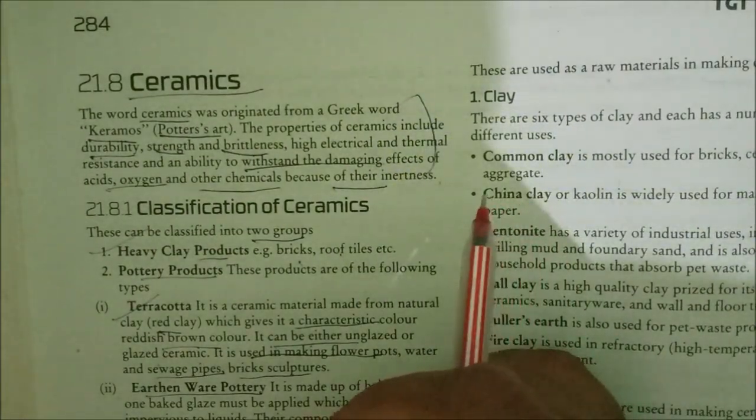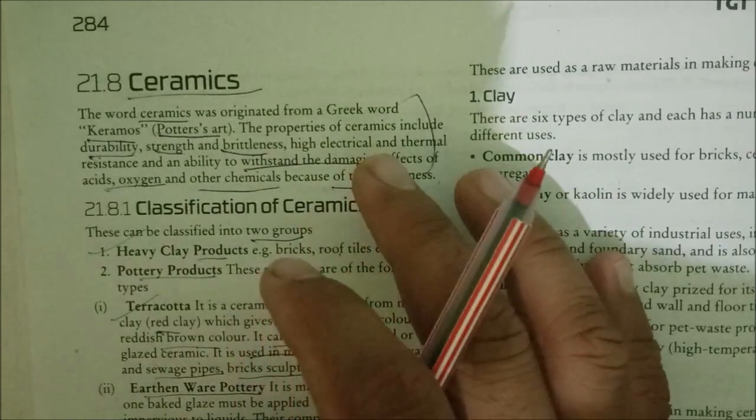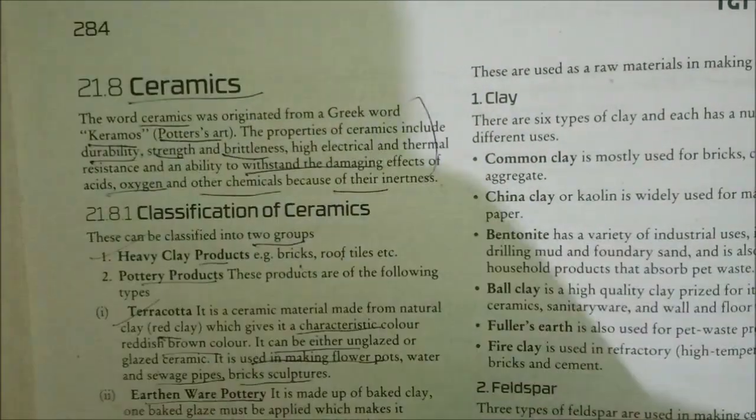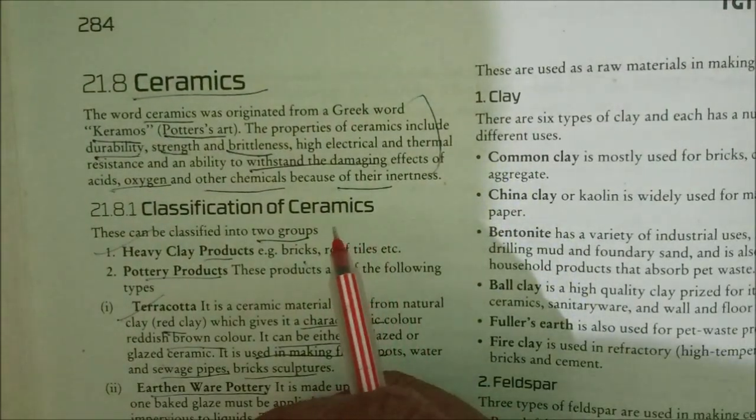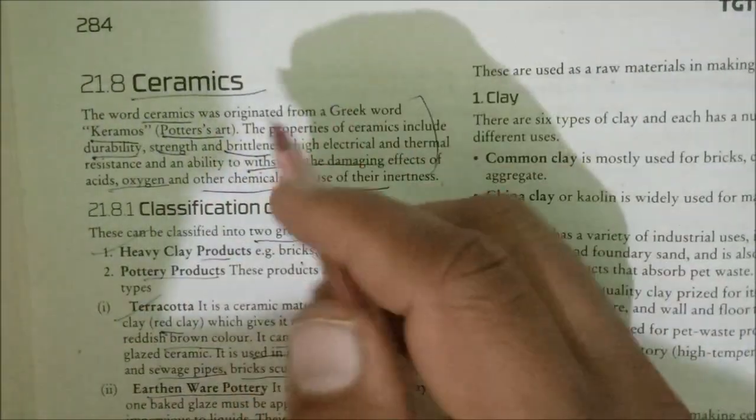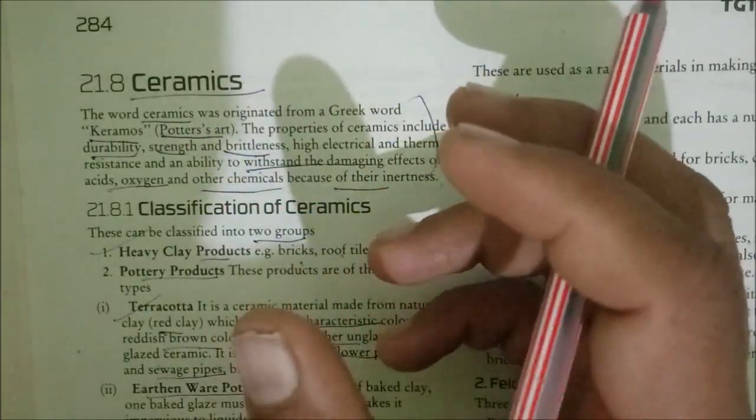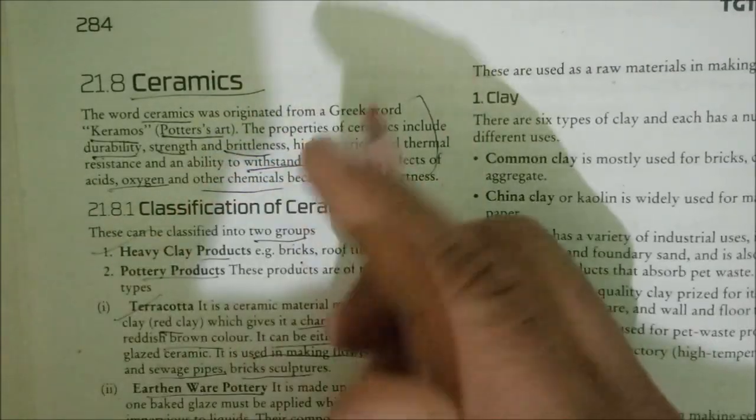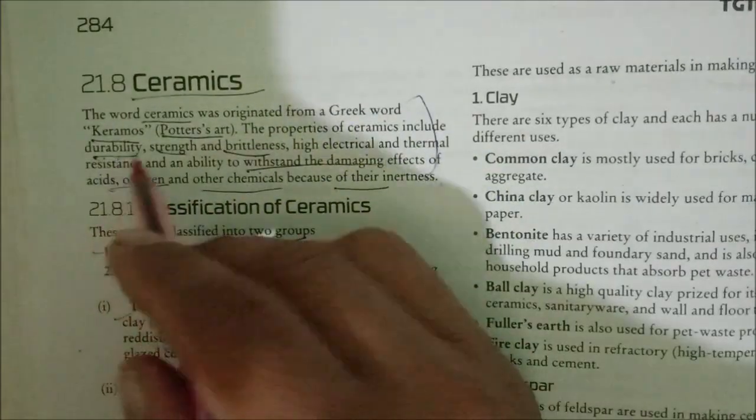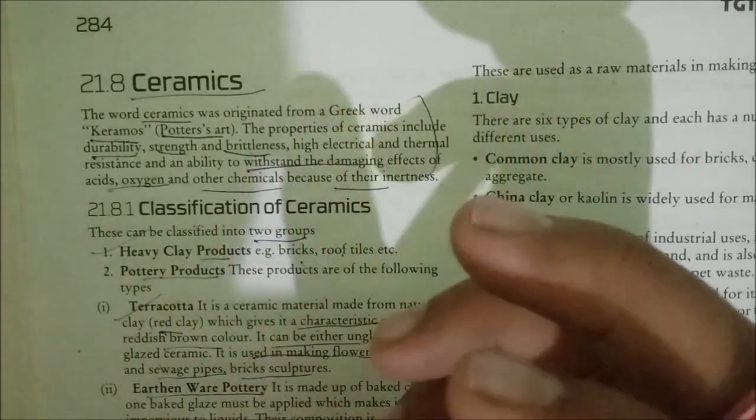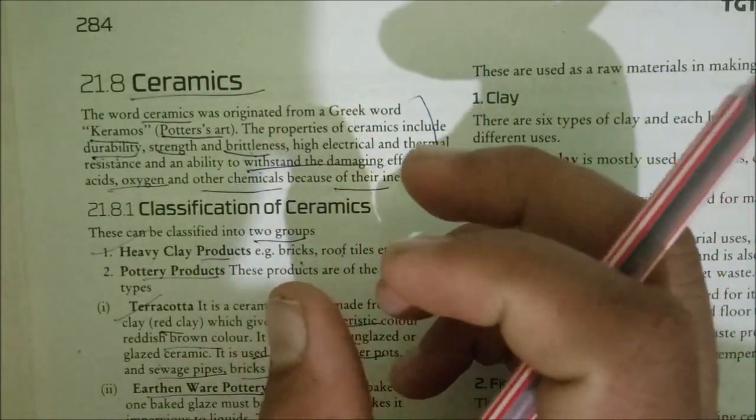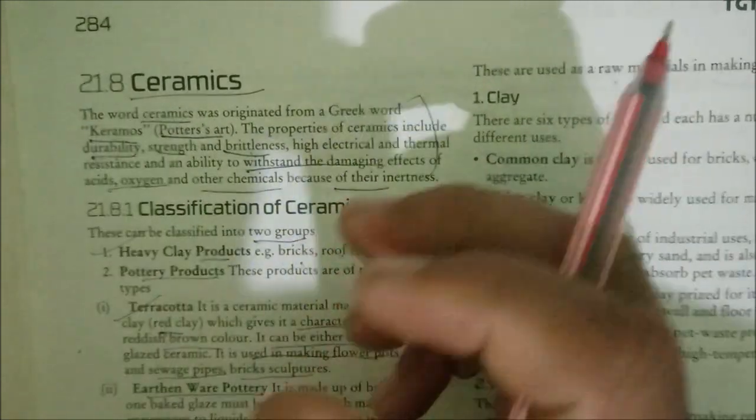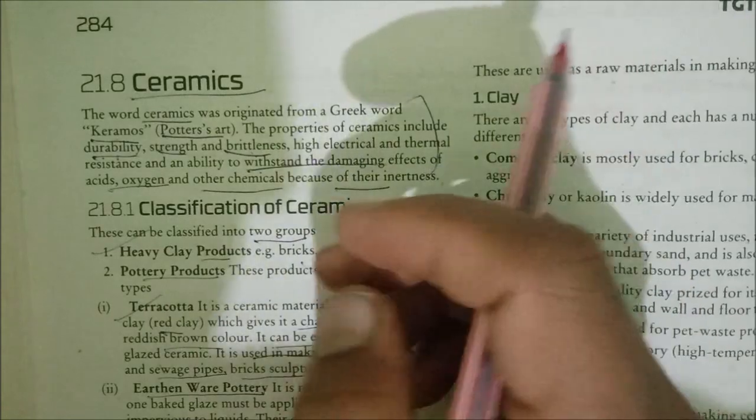Hello everyone, in today's video I'm going to cover a topic from natural materials and man-made materials, specifically ceramics. The word ceramics originated from the Greek word 'keramos,' meaning potter's art. The properties of ceramics include durability, strength, brightness, high electrical and thermal resistance, and an ability to withstand the damaging effects of acids, oxygen, and other chemicals because of their inertness.